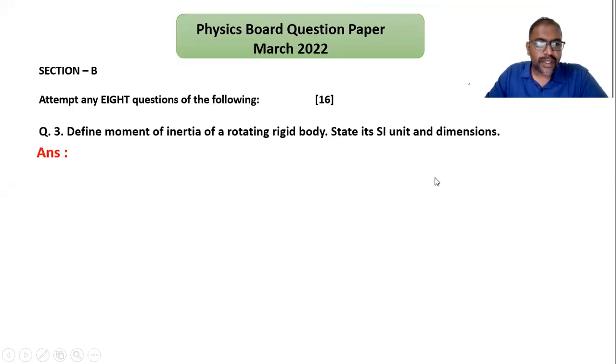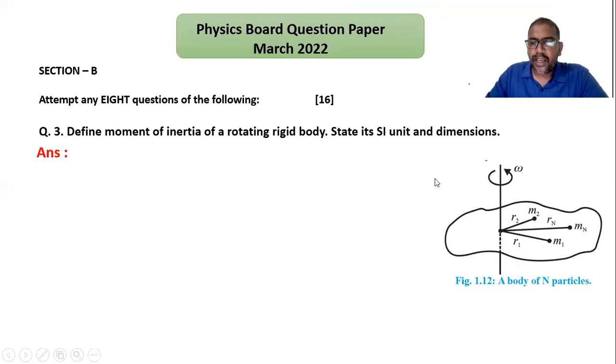Inertia means the ability of a body to maintain its state. Moment of inertia is the ability of a body to maintain its rotational motion, or the tendency of a body to maintain its rotational motion.